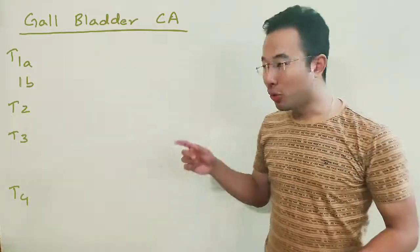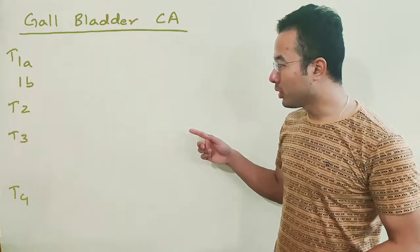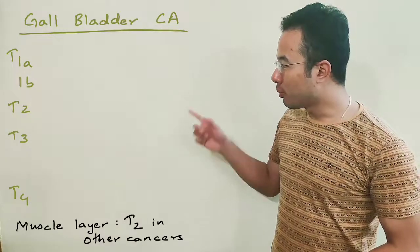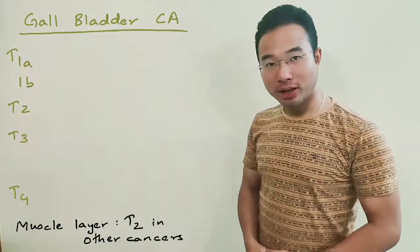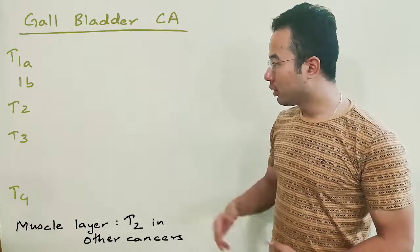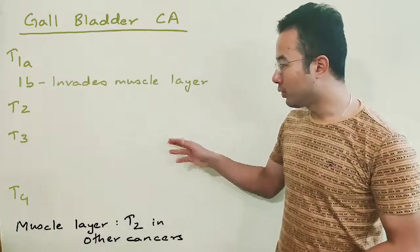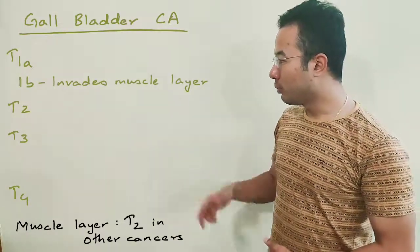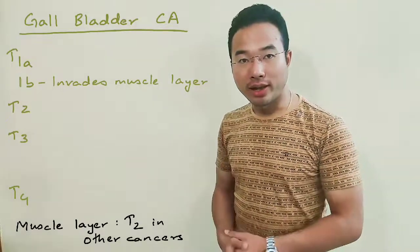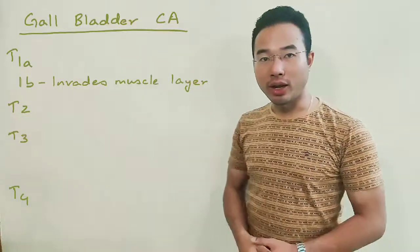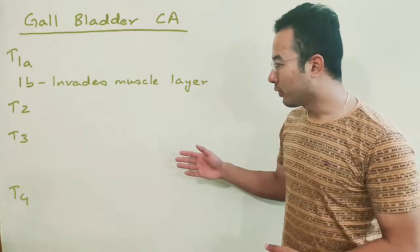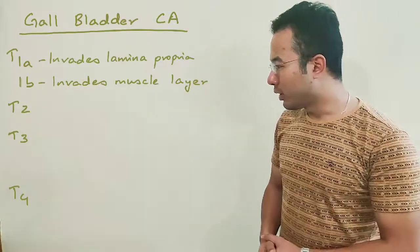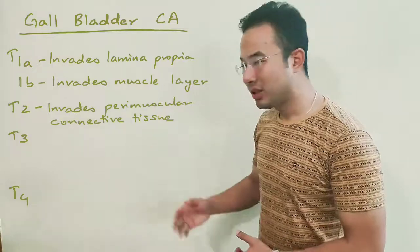Now for gallbladder T stages — this is interesting. The muscularis propria layer was supposed to be T2, but there is no submucosa in the gallbladder. So T1b is the muscle layer, unlike the other cancers. T2 is then blank in the usual sense, and T1b takes the muscle layer. T1a is invasion of the lamina propria. The perimuscular connective tissue, which was T3 in other cancers, is T2 in gallbladder.